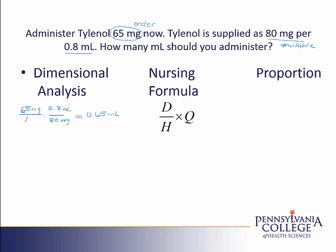The next approach is the nursing formula. In the nursing formula, the doctor's order or desired amount is 65 milligrams. What I have is 80 milligrams. The labels for these match and therefore cancel. The 80 milligrams is available in a quantity of 0.8 ml.